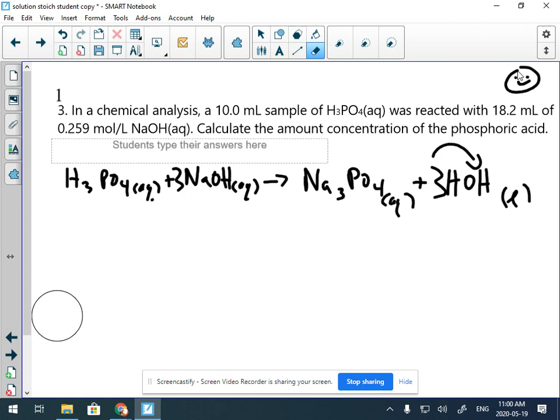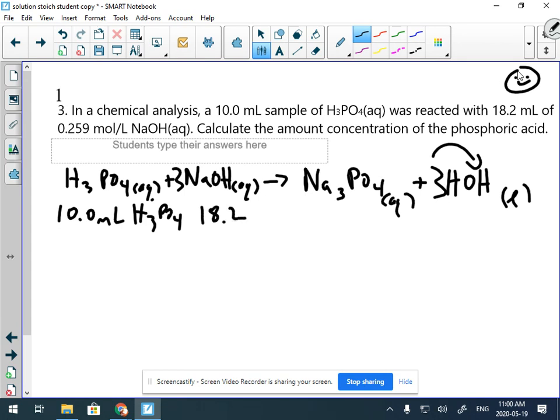Okay, we have 10 mL of phosphoric acid. We have 18.2 milliliters of sodium hydroxide and the concentration is 0.259 moles per liter, and that's moles sodium hydroxide per liter sodium hydroxide. We need the amount concentration or moles per liter of the phosphoric acid. That's what we're solving for.